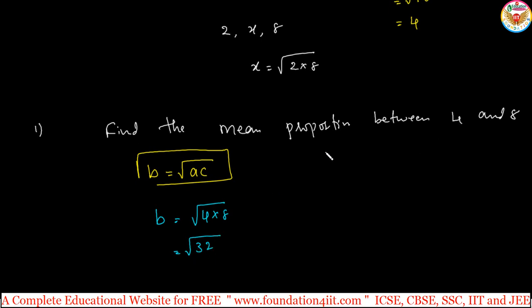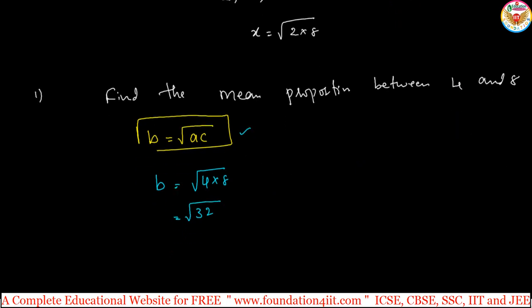You can also solve by taking x as the mean proportion and applying the formula B equals square root of A into C. Same way, if they ask for the third proportion instead of the mean proportion, let us see the second question.